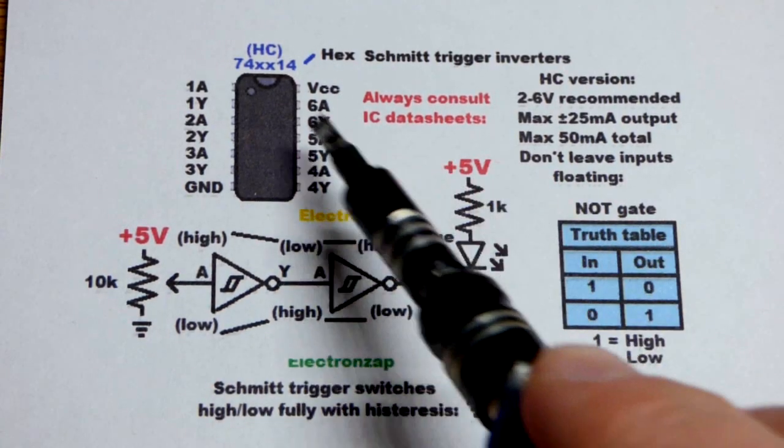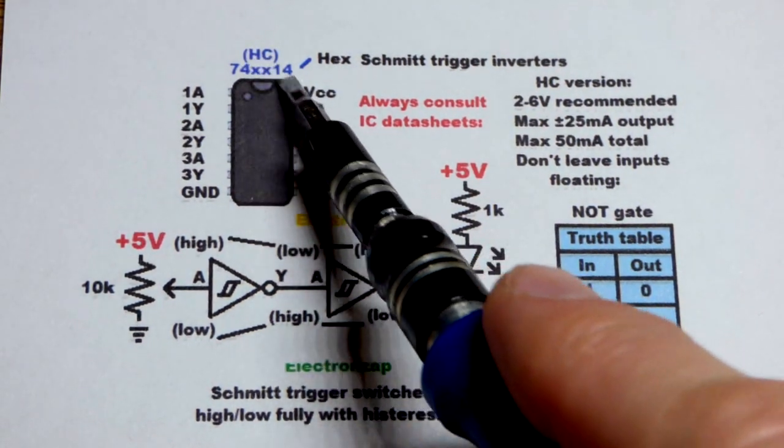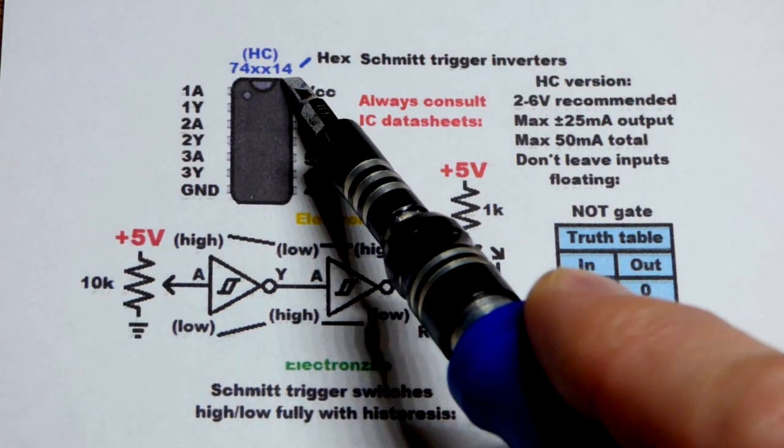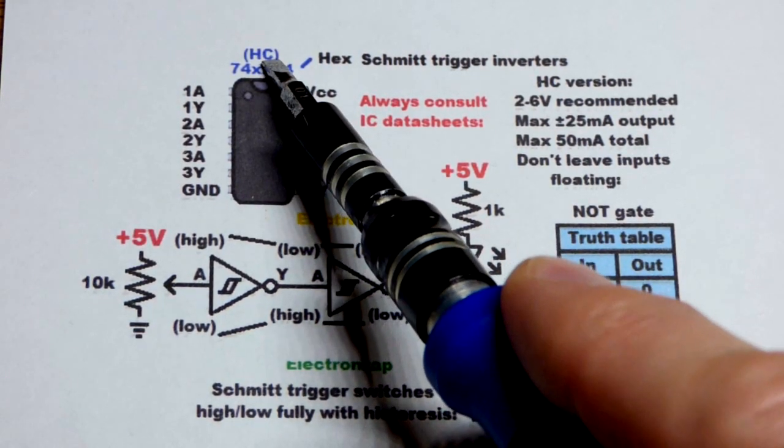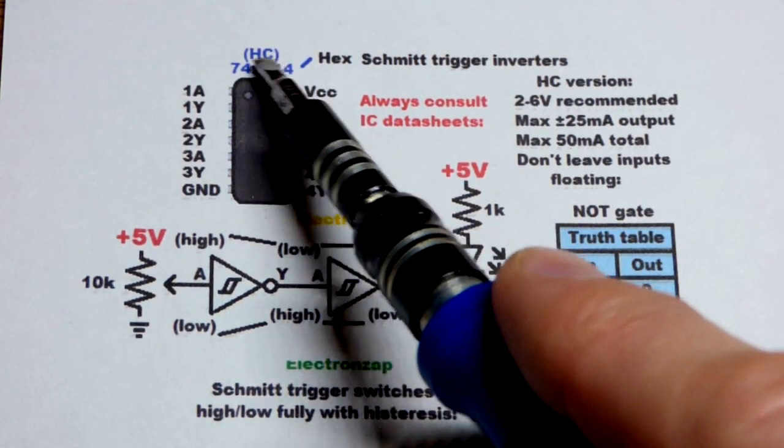In this video, we're going to use the 74HC14 integrated circuit again. HC is the high speed CMOS version of this. There's other versions.